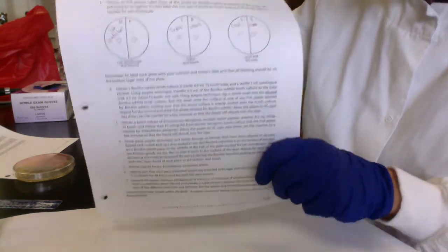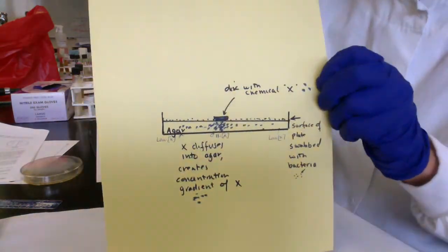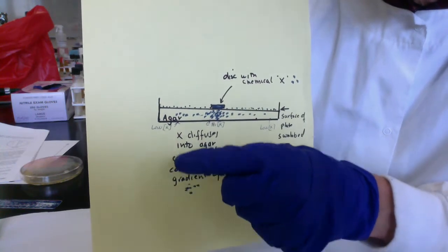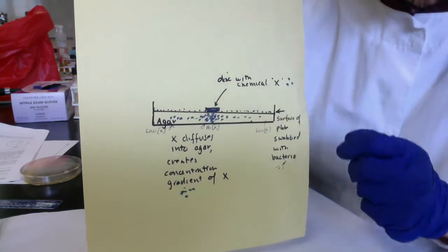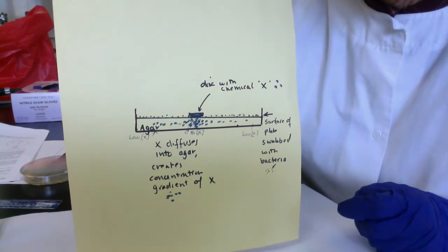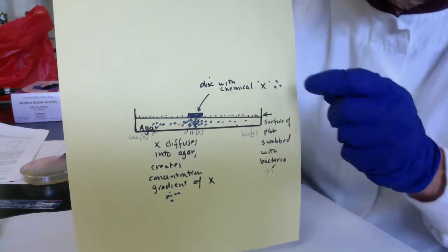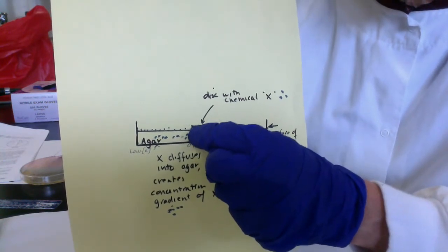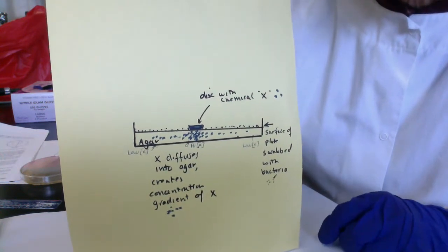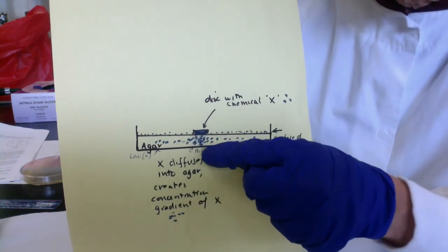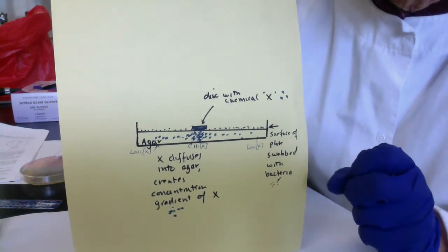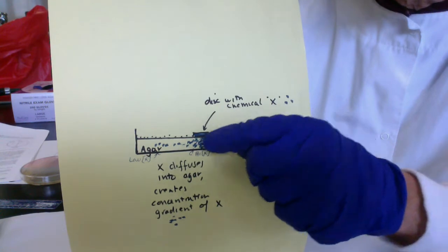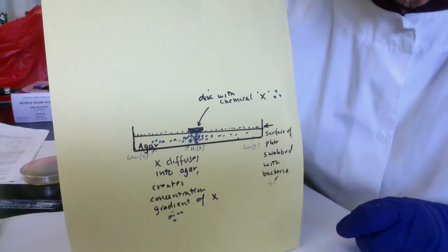Just to give you the principle behind disk diffusion, I made a couple of cartoons. This is a cross-section through our agar plate — the dots represent the bacteria swabbed over the surface of the plate, and the blue represents the disk soaked in a chemical, which we'll call chemical X. As soon as we touch the disk to the surface of the plate, the chemical immediately starts diffusing into the agar, setting up a concentration gradient. The highest concentration of the chemical will be in the agar right below the disk, and as we get further away, the concentration decreases. The lowest concentration would be near the walls of the plate.